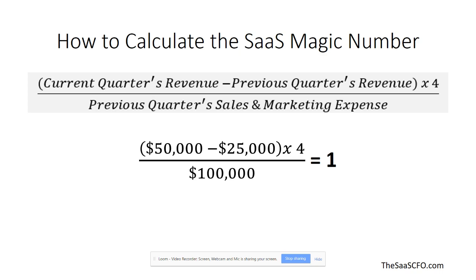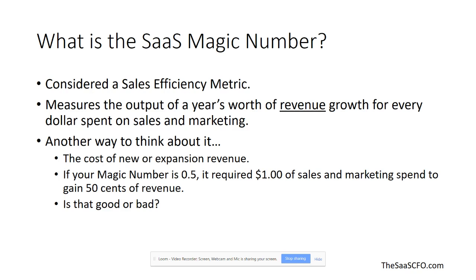So what is the SAS magic number? It's considered a sales efficiency metric because we are comparing revenue output to sales and marketing spend. It measures the output of a year's worth of revenue growth — not bookings — for every dollar spent on sales and marketing. Another way to think about it: it's the cost of new or expansion revenue.